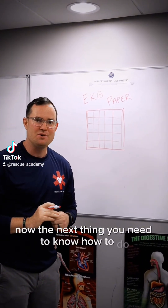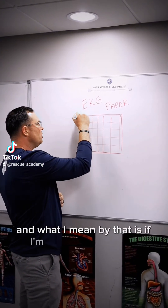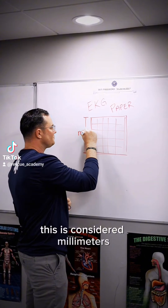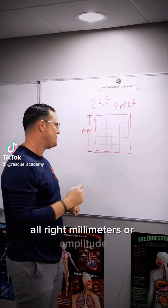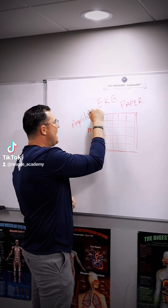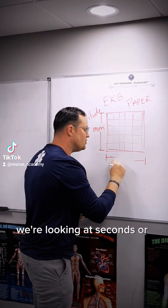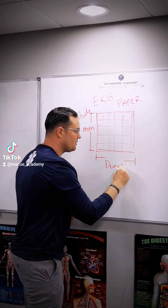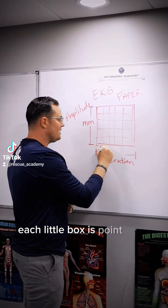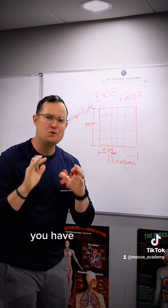The next thing you need to know is how to label each box. When looking vertically, this is measured in millimeters, or amplitude. When we look horizontally, we're looking at seconds, or duration. Each little box is 0.04 seconds — you have to know that.